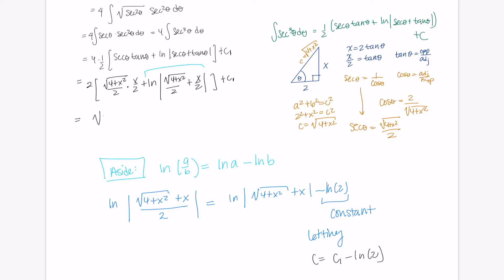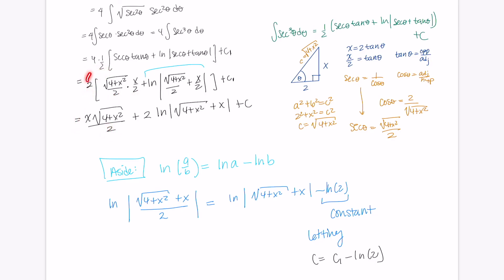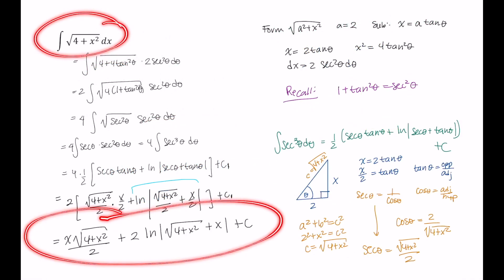So the final answer is: the square root of 4 plus x squared times x, divided by 2, plus 2 times the natural log of the square root of 4 plus x squared plus x, plus C. The 2 was distributed: 2 times one half gives one half for the first term, and multiplying the 2 through gives a coefficient of 2 in front of the natural logarithm. I hope this video was helpful.